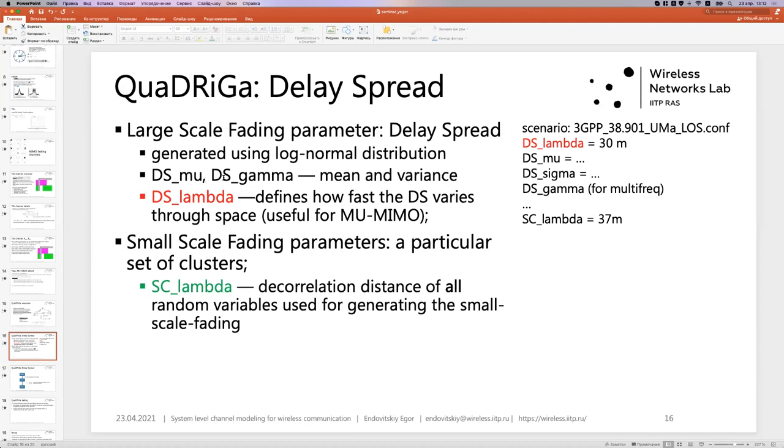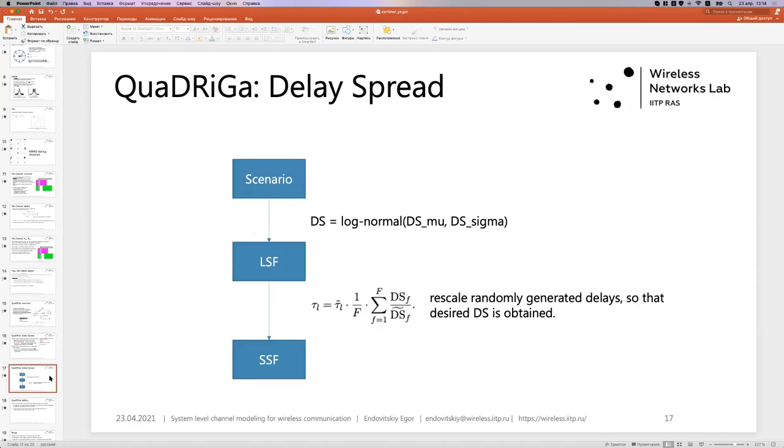And the third parameter is this lambda. It defines how fast this varies through space. It means it is useful for MU-MIMO because in Quadriga, if you place two users near each other, their large-scale fading parameters will be, for example delay spread, will be correlated based on the distance. And the order of such correlation is this lambda. It's a part of scenario. Now, that was a large-scale fading parameter. Moving on to small-scale fading parameters. What are those? Those are a particular set of clusters, because they actually define small-scale fading. And there is a corresponding parameter, which is called S-Lambda. What is this? It's a decorrelation distance of all random variables used for generating the small-scale fading. Now, to slightly elaborate. Let's look at the flowchart.